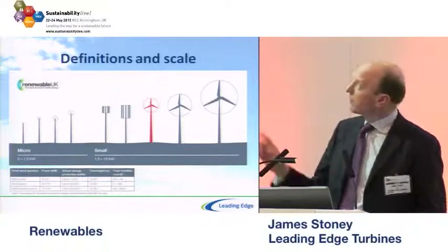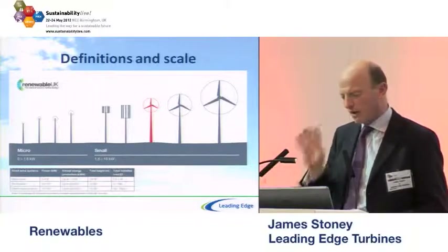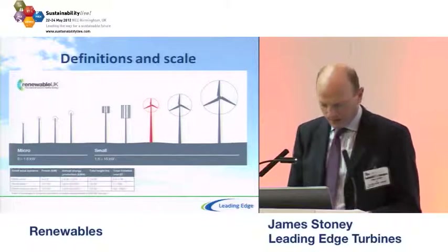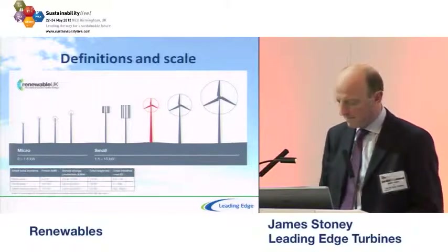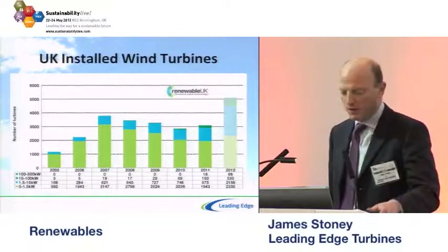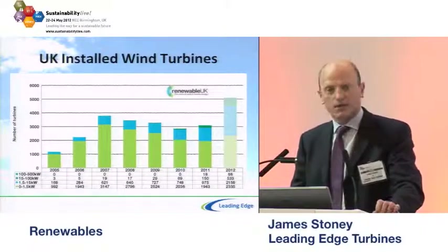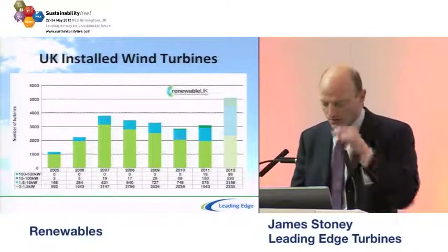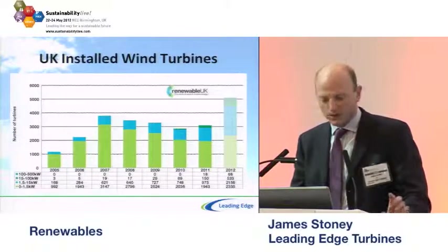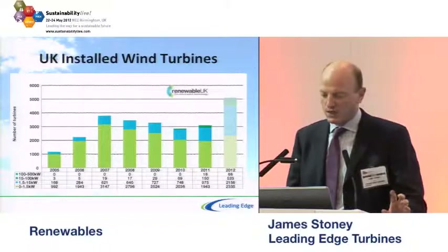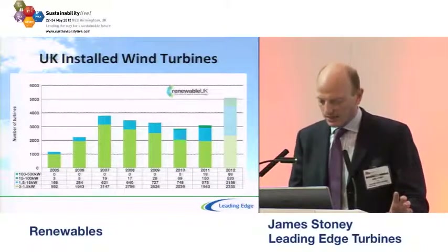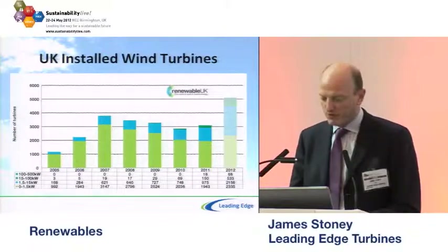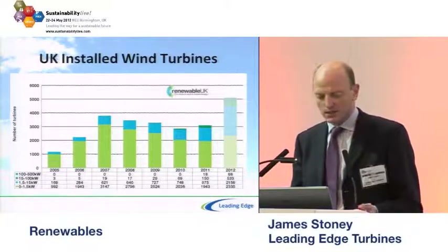Conventional propeller-type turbines have a larger swept area all facing the wind, whereas with a vertical axis turbine half the blade is moving into the wind, making it less efficient. Looking at the UK market, about 20,000 small turbines are installed to date. The majority are under 1.5 kilowatts, though the 1.5 to 15 kilowatt range has grown steadily with the feed-in tariff, and the 15 kilowatt-plus segment is also growing, though still small in number.